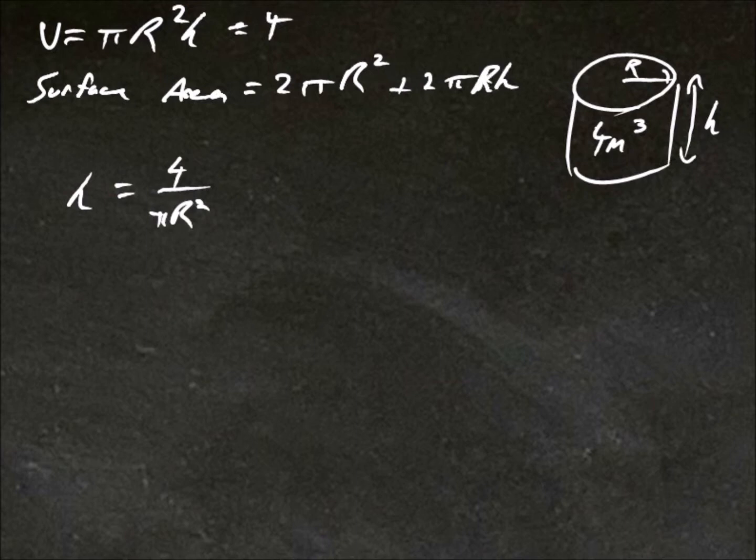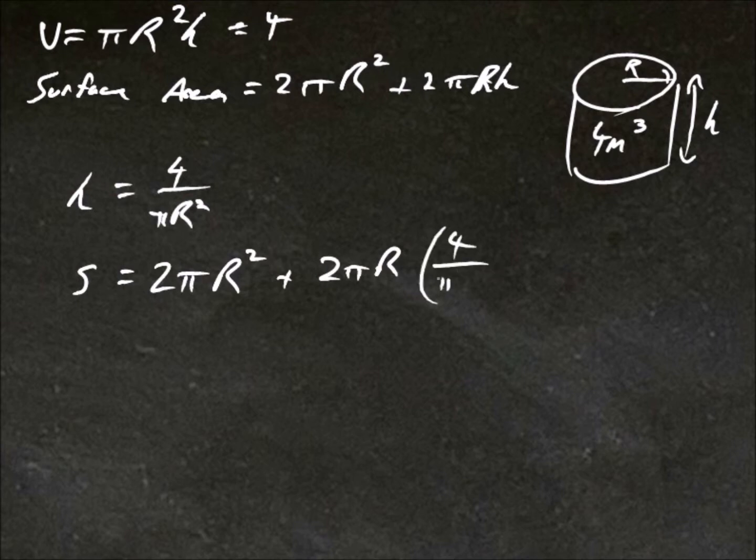Now if we substitute this h value into our surface area, we'll say s for surface area equals 2 pi r squared plus 2 pi r. And we've got h equals 4 over pi r squared. This simplifies to 2 pi r squared plus 8 r to negative 1.